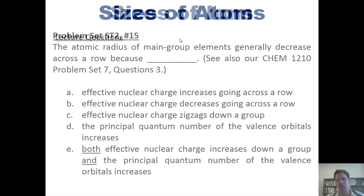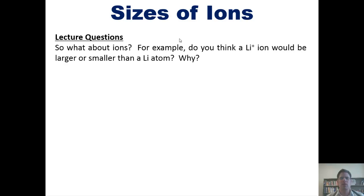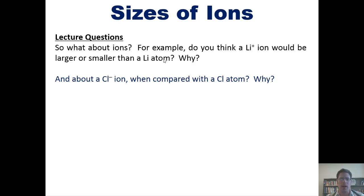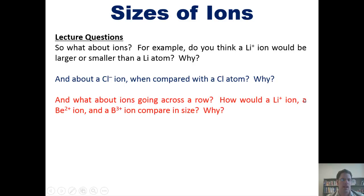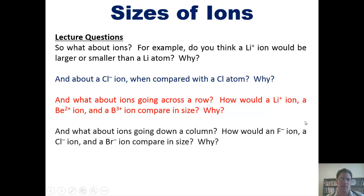This brings us to a different topic — what about ions? Do you think a lithium⁺ ion would be larger or smaller than a neutral lithium atom, and why? What about a chloride ion compared to a neutral chlorine atom? What about ions going across a row — how would a Li⁺, Be²⁺, and B³⁺ compare in size, and why? And what about ions going down a column — how would fluoride, chloride, and bromide compare in size, and why?